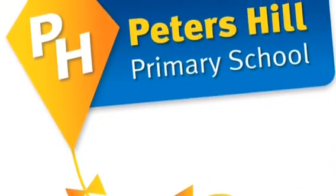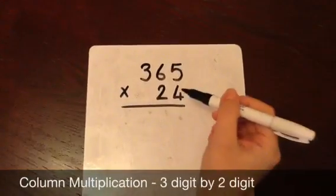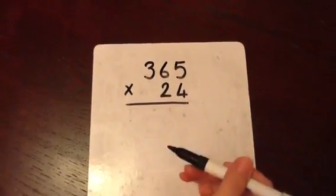Column Multiplication: 3 digits by 2 digits. It's very important in column multiplication that we keep all of the digits in the correct column.